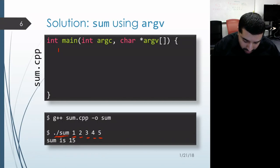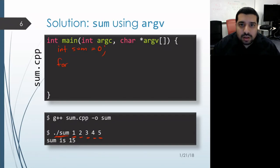We'll start off with a sum that's zero, and then we'll iterate over our argv array. We'll start this iteration at index one and end it when we get to our number of arguments, which is argc.